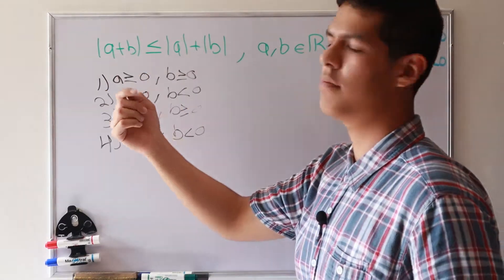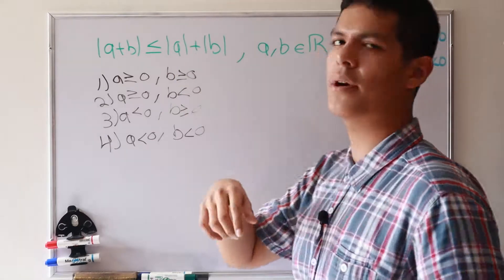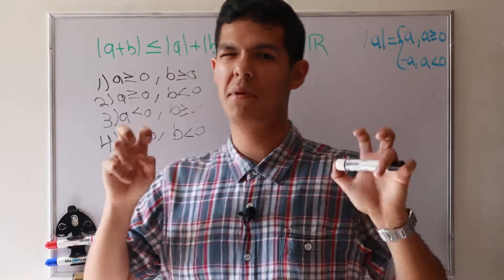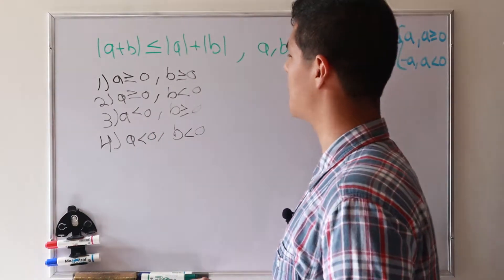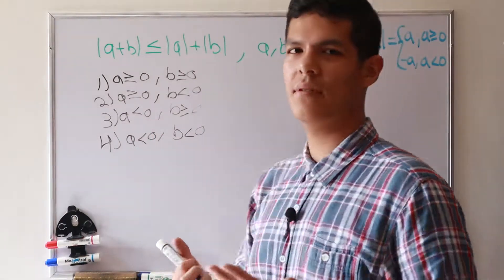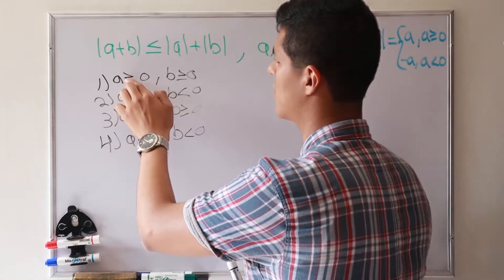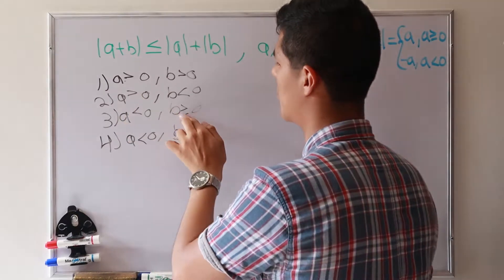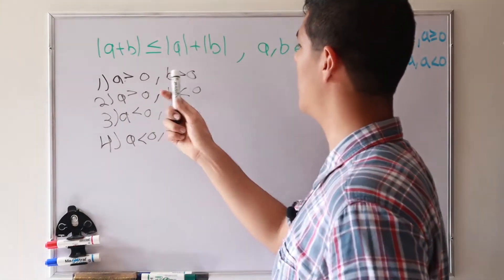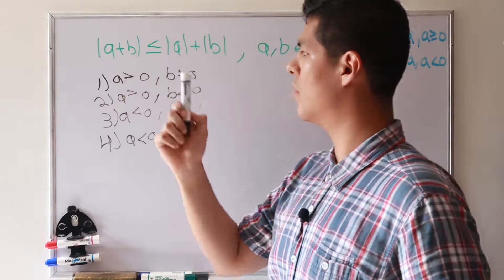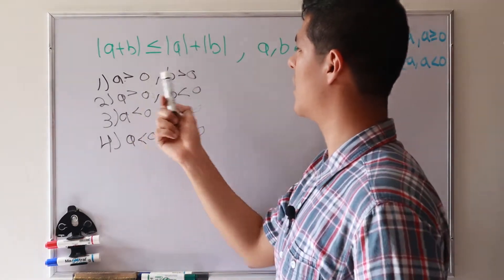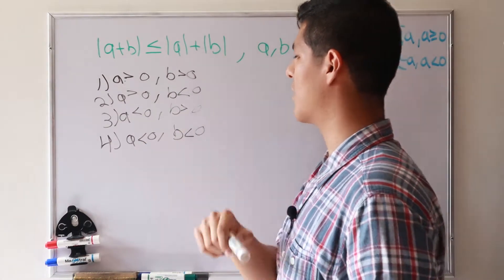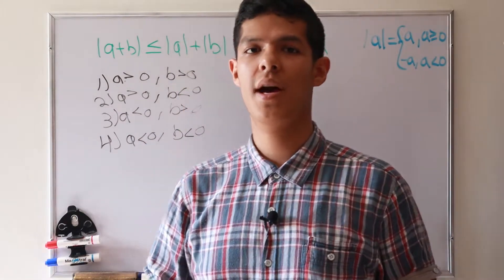One trivial case is when they are all zero: zero plus zero equals zero, and the absolute value of zero equals zero. So this is a trivial case. In order to avoid this, we put the restriction that they are nonzero.